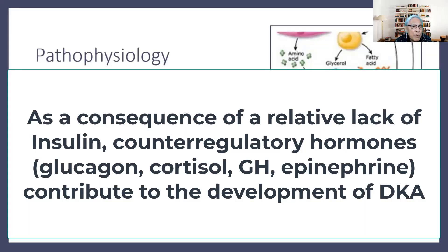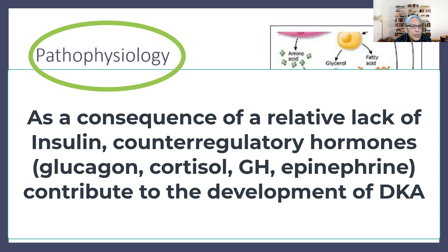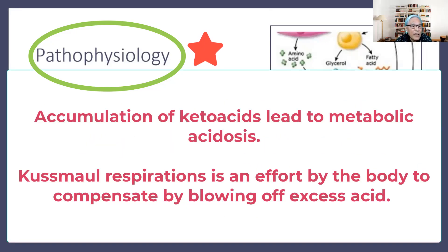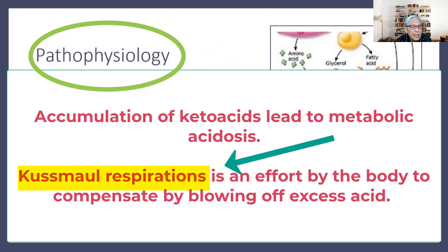The pathophysiology results from a relative lack of insulin. Because of this lack of insulin, the body looks for other sources of energy, and there is going to be an increase in regulatory hormones — release of glucagon, cortisol, growth hormone, and epinephrine — resulting in hepatic metabolism of free fatty acids, which leads to the production of ketones and induces the state known as ketoacidosis. This is a metabolic acidosis, and the lungs will now compensate, resulting in the typical breathing pattern seen in a patient with diabetic ketoacidosis.